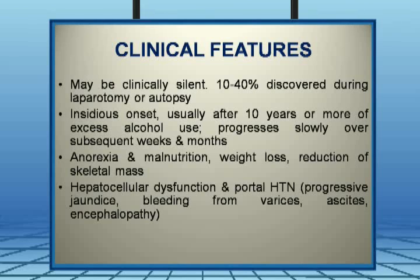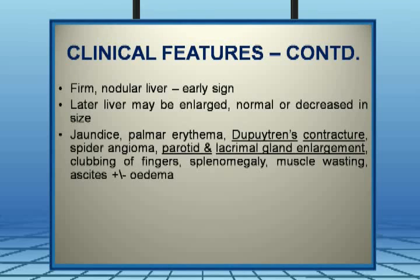The patient will have malnutrition, anorexia, and significant weight loss with reduction of skeletal muscle mass, as opposed to the abdomen which will be distended due to ascites. There will be hepatocellular dysfunction and portal hypertension manifesting as progressive jaundice, bleeding from varices, ascites, and hepatic encephalopathy. In early stages the liver may be palpable, but later it becomes shrunken. The patient will also manifest with palmar erythema, Dupuytren's contractures, spider nevi, parotid and lacrimal gland enlargement, and clubbing of fingers.